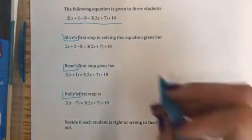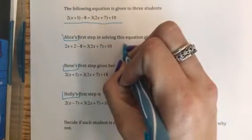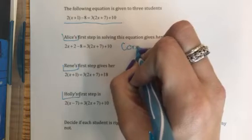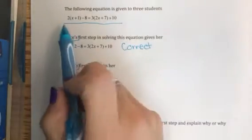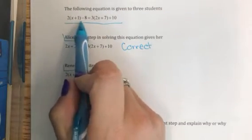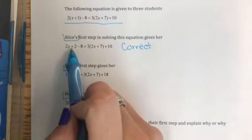So if we're going through, Alice's first step is correct. Her first step of what she did was to distribute this 2 into the parentheses and to get a 2x plus 2.